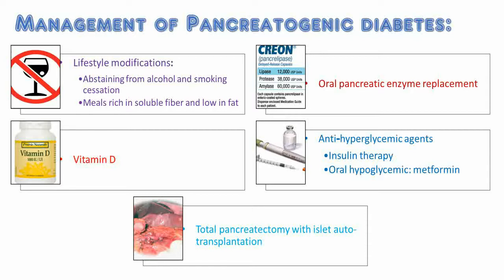Anti-hyperglycemic agents. Since the principal endocrine defect is insulin deficiency, insulin therapy is the preferred treatment for most patients — especially to correct hyperglycemia for cystic fibrosis-related diabetes, for acutely ill or hospitalized patients, and for severely malnourished patients. In chronic pancreatitis-associated diabetes, when hyperglycemia is mild, oral hypoglycemic agents may be appropriate. Metformin can be the first choice, followed by other oral hypoglycemic drugs.